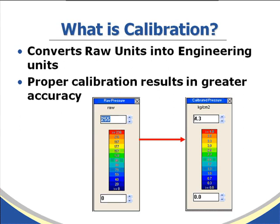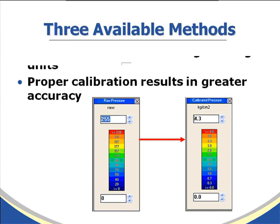Calibration basically converts raw units or relative units into engineering units, such as psi, grams per centimeter squared, or millimeters of mercury — actually several other options we have in pressure. Proper calibration results in greater accuracy.